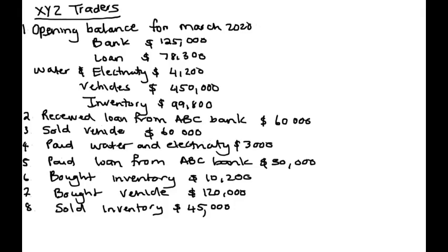Today we'll be doing a general ledger for all of these accounts for each of these transactions. So let's start. Opening balance for March 2020 for XYZ Traders. We have your bank for $125,000, your loan for $78,300, your water and electricity for $4,200, vehicles $450,000, and your inventory for $99,800. So we will go ahead and insert that.